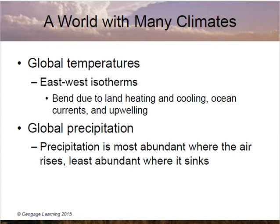Looking at east-west isotherms, you'll see they bend due to land heating and cooling, ocean currents, and upwelling. If the earth's surface were uniform, you'd expect the hottest weather in the tropics decreasing uniformly toward the poles. But that's not the case because of the way landmasses absorb and reradiate heat quickly, while oceans absorb and reradiate slowly. Upwelling and submersion of water currents also create significant variation in temperature contrast as you head toward the poles.